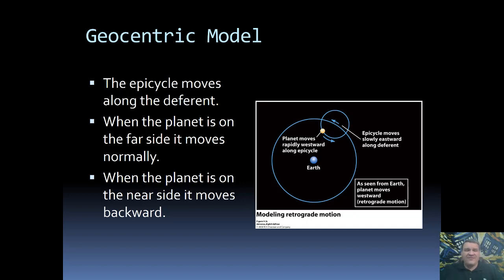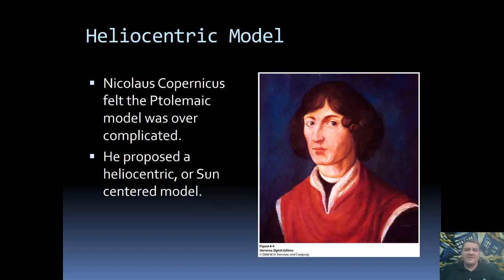Now, this was the state of things from about the time of the ancient Greeks until the 1500s. Now, in the 1500s, there was a priest by the name of Nicholas Copernicus who felt that this geocentric model known as the Ptolemaic model, named after Ptolemy, who was the one who kind of codified and finalized everything. He felt that this Ptolemaic model was very complicated. I mean, we've got circles on top of circles on top of circles. It's pretty messy and complicated. So Copernicus felt that a heliocentric or sun-centered model was simpler.